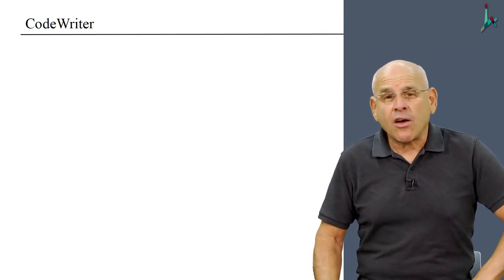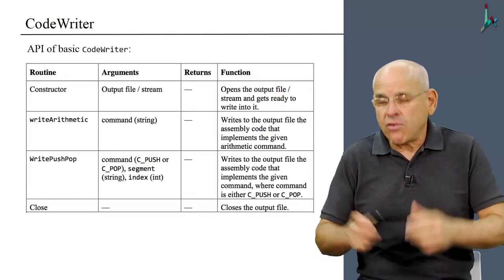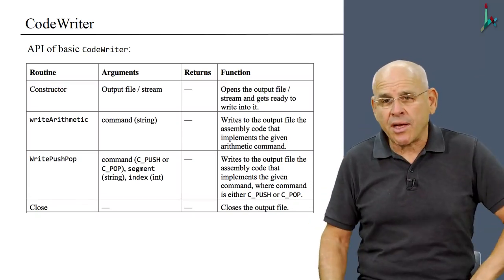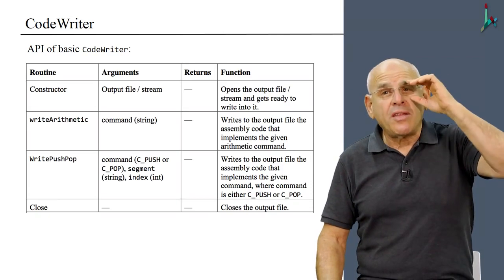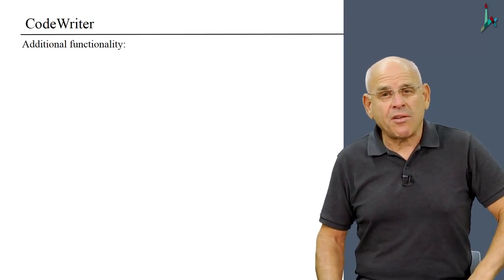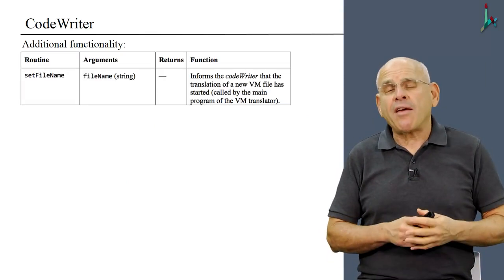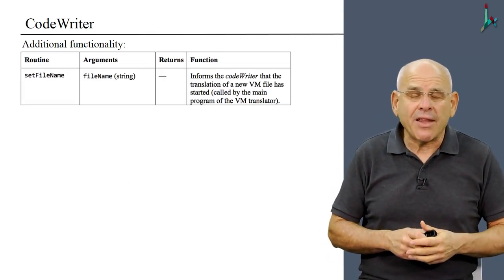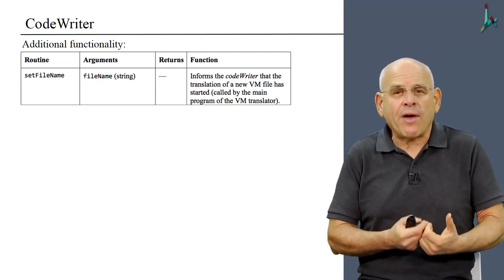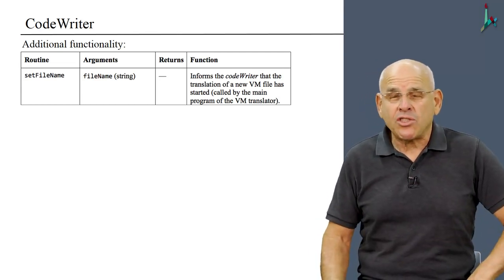And finally, we have to extend the code writer. So the API of the basic code writer that we developed in the previous project is shown here on the screen. To this API, we have to add some additional functionality. First of all, we'll have a method called setFileName, which we will use to inform the code writer that the processing of a new VM file has just started.